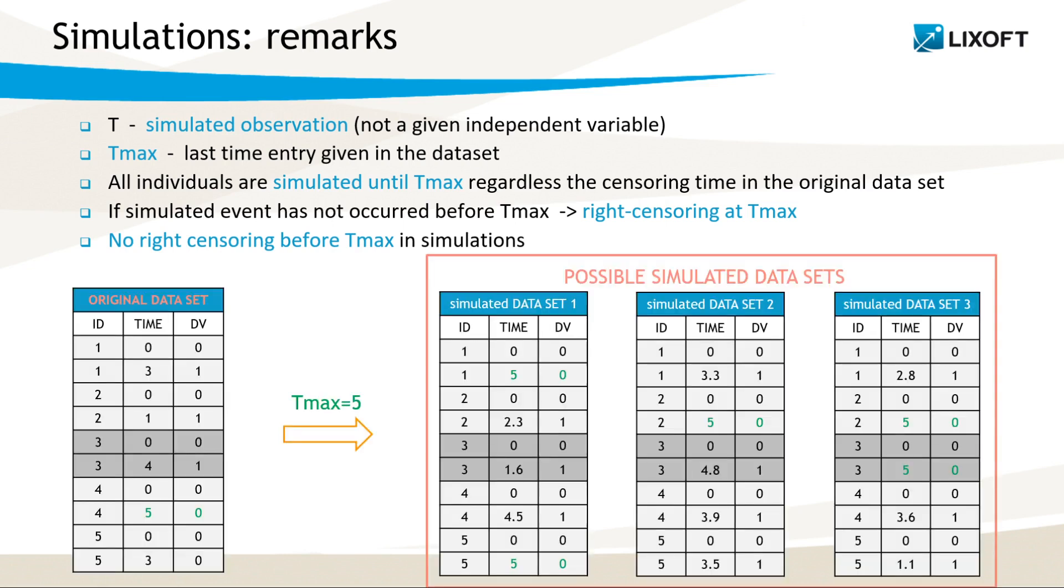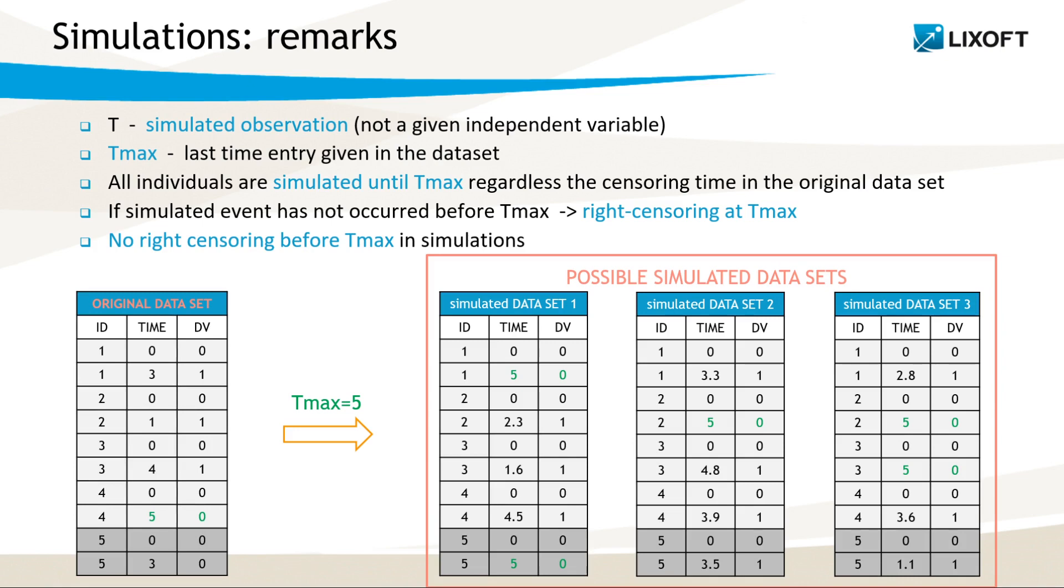Look at the example. Individual 3 from the original dataset given in the table on the left experienced an event at time 4. In simulations, in the tables on the right, an event for this individual can occur before or after that time, or may occur after t max, as in the last table. Similarly, individual 5 left the study at time 3 and no event was registered. But in simulations, an event can occur before or after time 3. And if an event has not occurred at t max equal 5, then it is marked as right-censored.